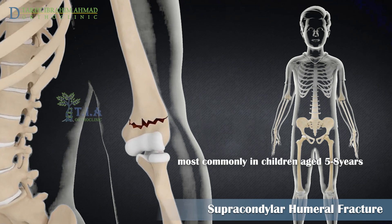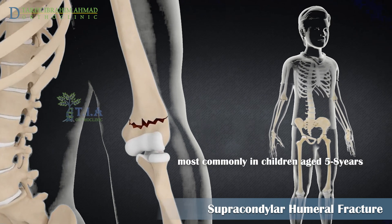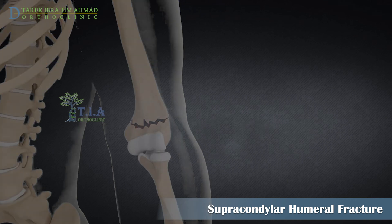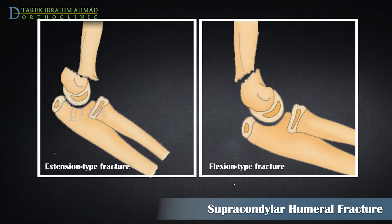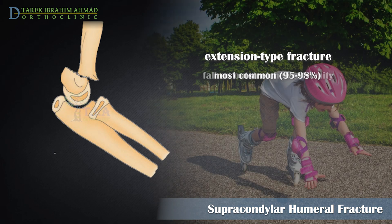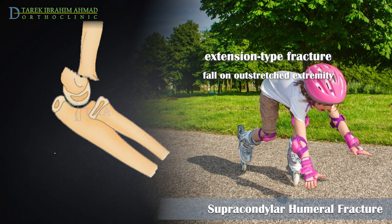These fractures happen most often to children younger than eight years old. The fracture line typically propagates transversely across the distal humerus just above the joint. Extension and flexion are the two major types of supracondylar fracture, each with a characteristic mechanism of injury. Extension fractures account for approximately 95 percent of supracondylar fractures.